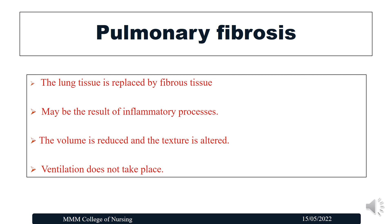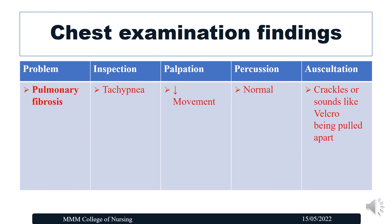The next respiratory problem is pulmonary fibrosis — a condition in which lung tissue is replaced by fibrous tissue due to repeated inflammation of the lung parenchyma, reducing volume and altering texture so ventilation does not take place in the fibrotic areas. Chest examination findings: in inspection, increased respiratory rate (tachypnea). In palpation, decreased chest movement. In percussion, normal findings. In auscultation, crackles described as a sound like velcro being pulled apart.